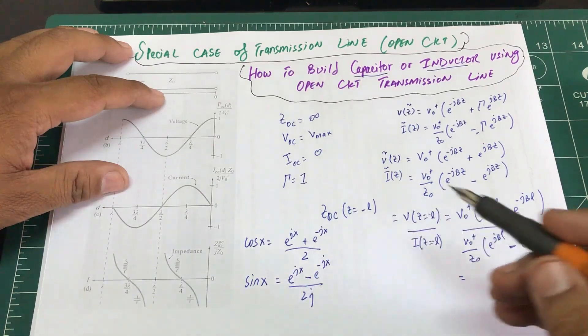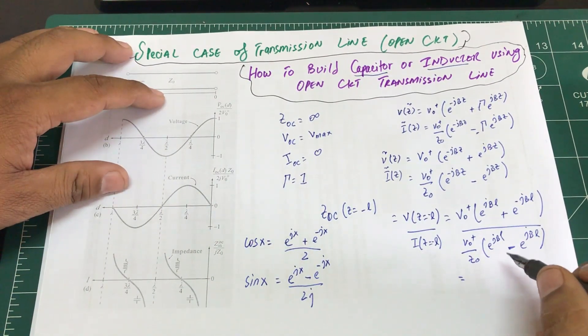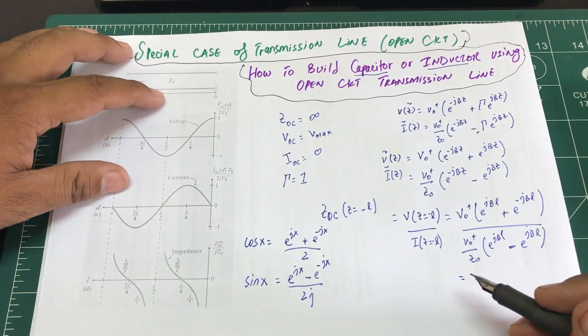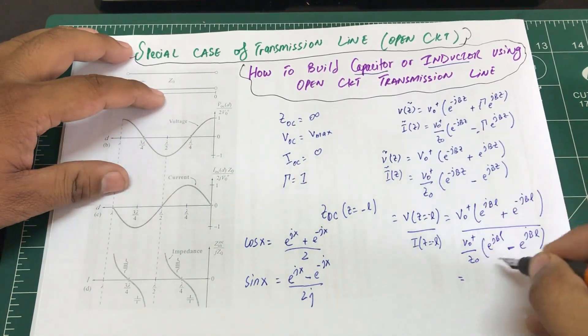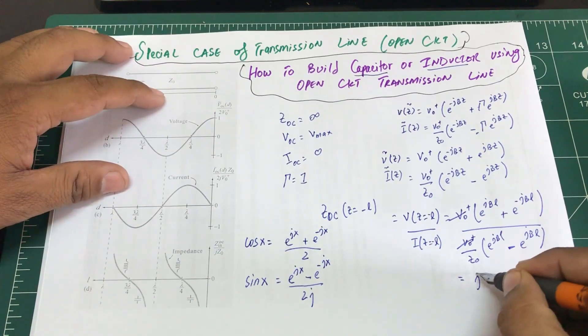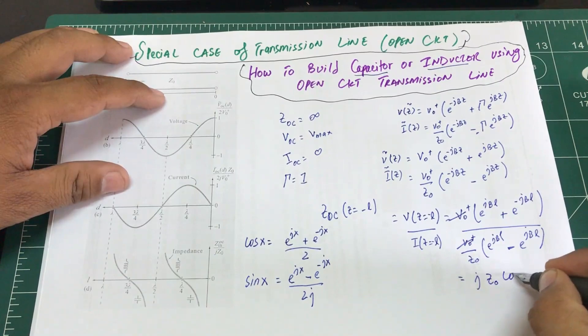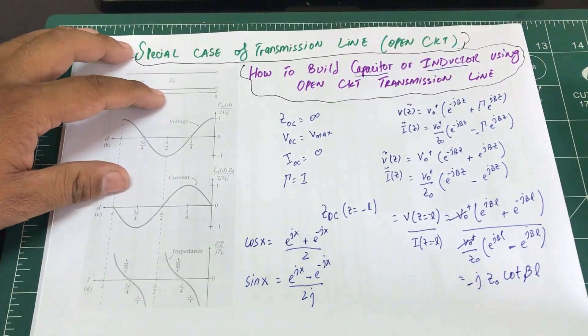These will cancel out. This would become cotan - this is cos, this is sin. Sin over cos is tan, or cos over sin is cotan. This whole thing, after canceling it out and moving it up, would become jZ₀cot(βl), and there's a minus sign. So this is going to be the impedance of an open circuit line.